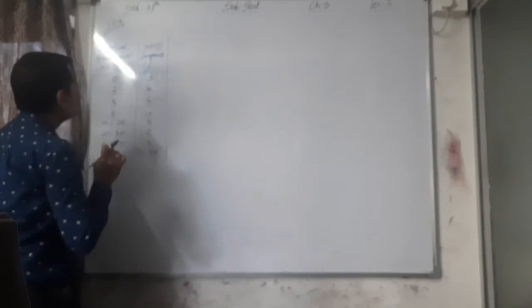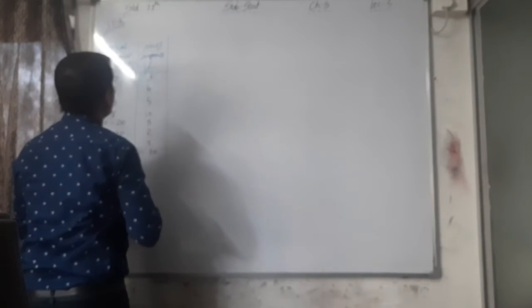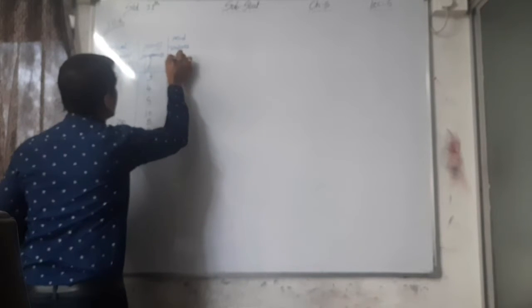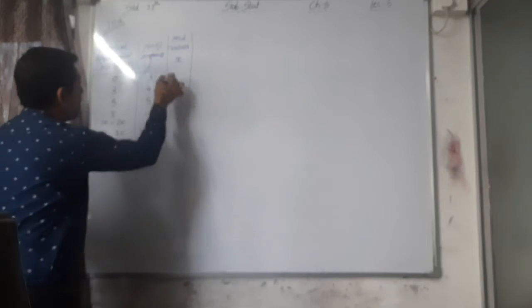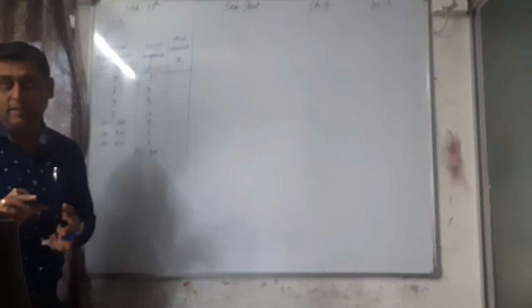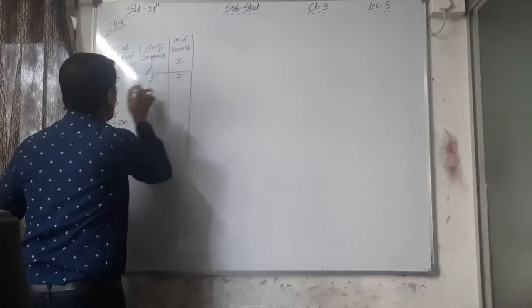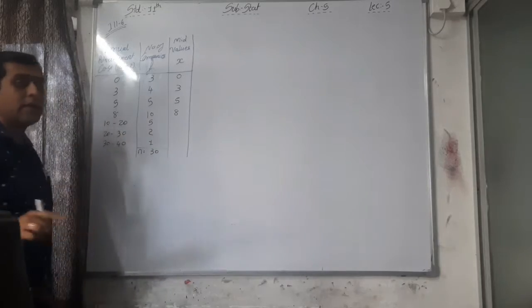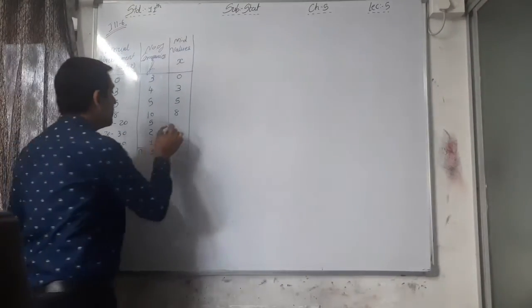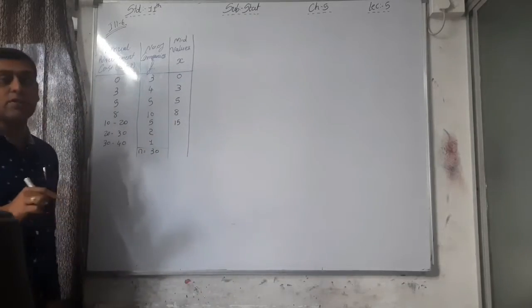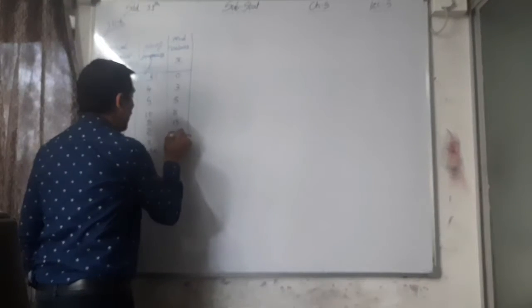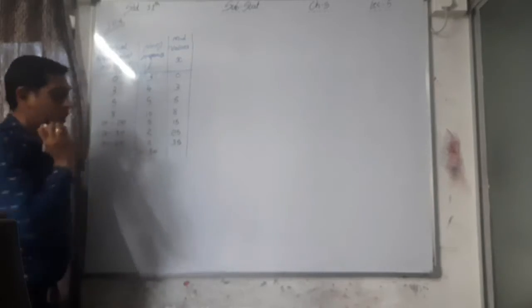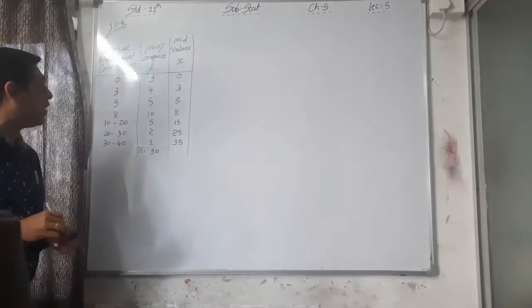Now what we need first of all is mid-values, that is X. In the discrete data the mid-value is as it is — no change: 0, 3, 5, 8. For 10 to 20: (10+20)/2 = 15. For 20 to 30: (20+30)/2 = 25. For 30 to 40: 35. So the mid-values are 0, 3, 5, 8, 15, 25, and 35.